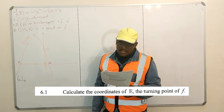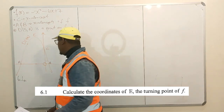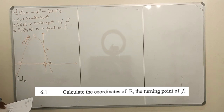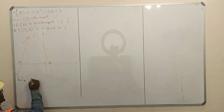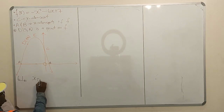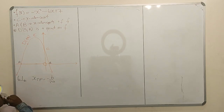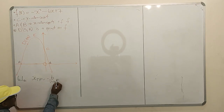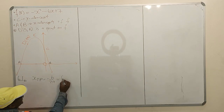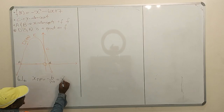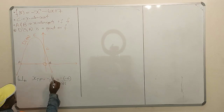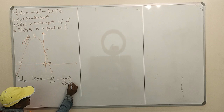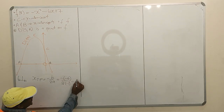6.1: Calculate the coordinates of the turning point of f. If we're given the equation of a parabola, to find the x-coordinate of the turning point, we use x = -b / 2a. Our b is -6, so it's negative b, which is -(-6). Our a is -1. So we get 6 over -2, which is -3.